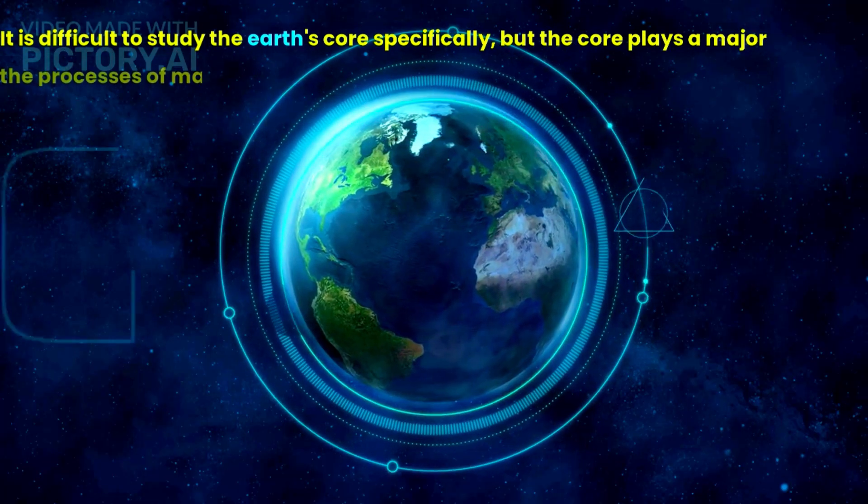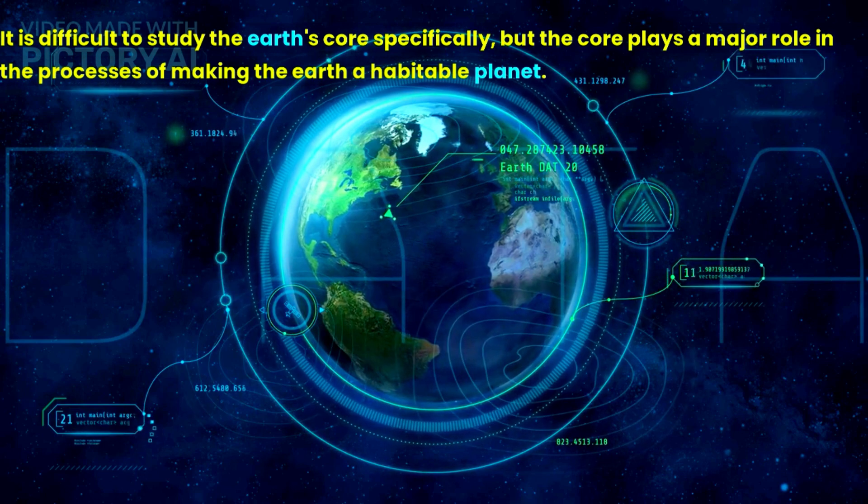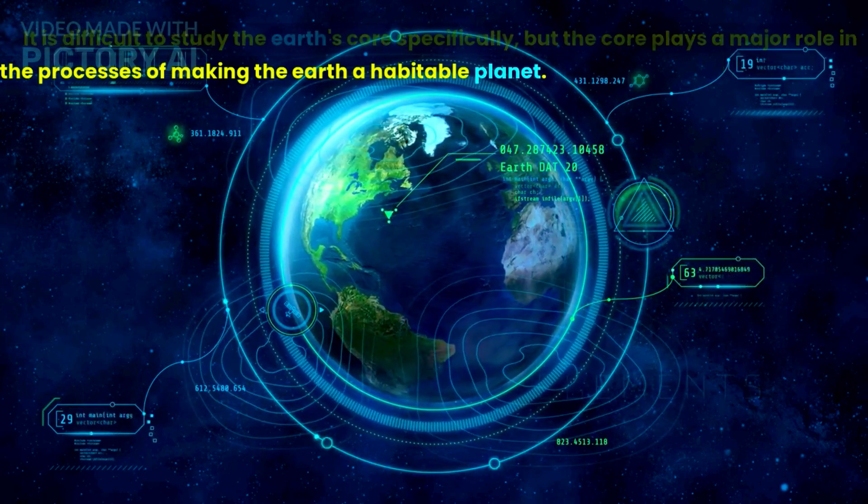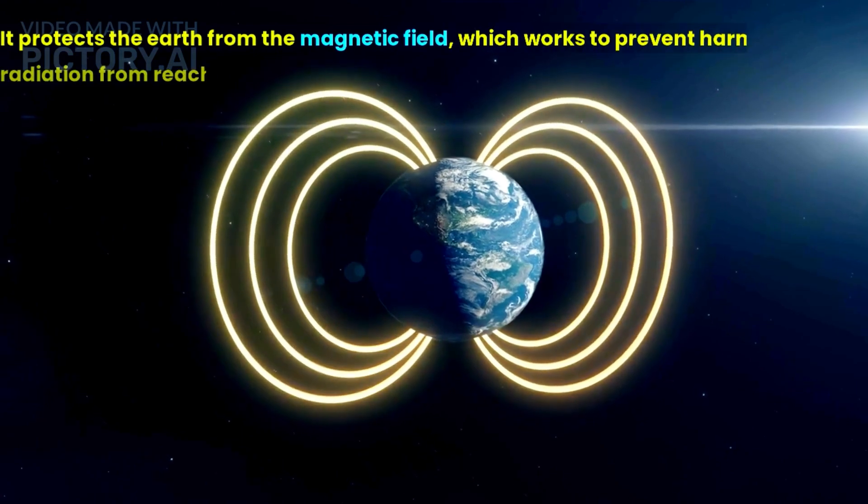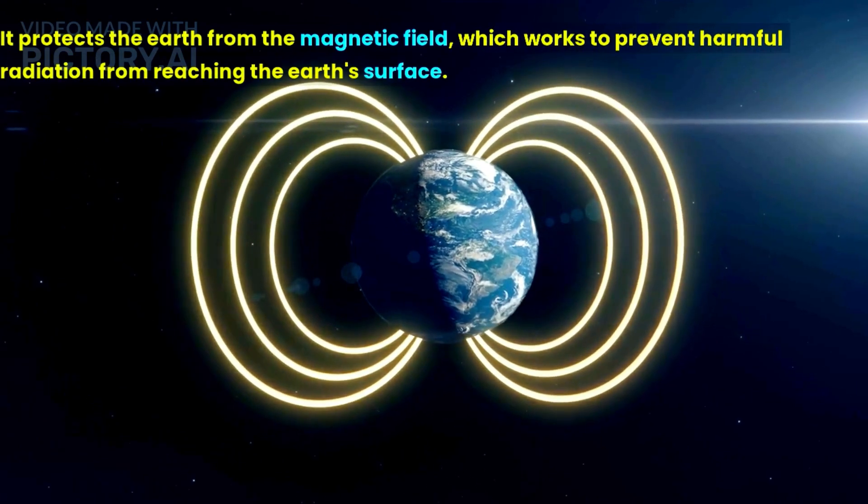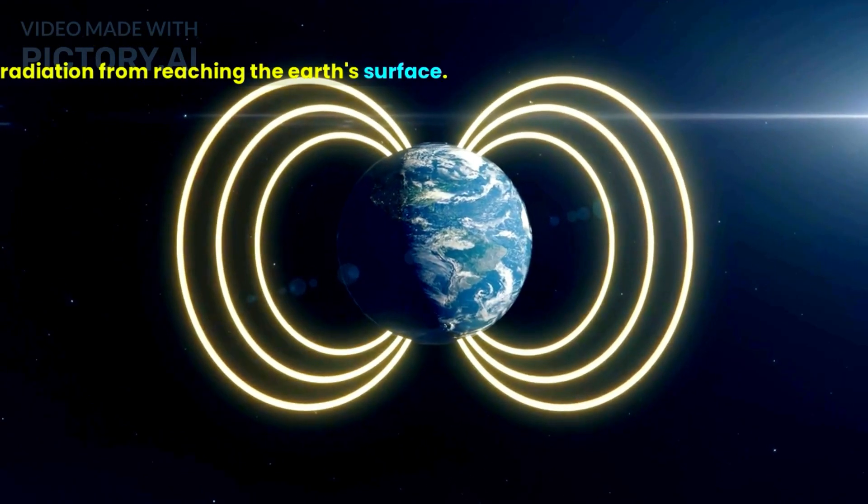It is difficult to study the earth's core specifically, but the core plays a major role in the processes of making the earth a habitable planet. It protects the earth from the magnetic field, which works to prevent harmful radiation from reaching the earth's surface.